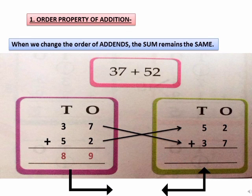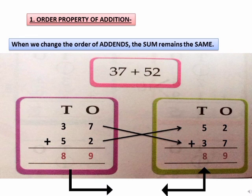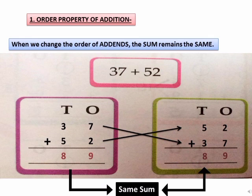Let's add. First, add the digit at ones place. That is 2 plus 7, which is equal to 9. Write 9 in the ones column. Now, add the digit at tens place. That is 5 plus 3, which is equal to 8. Thus, 52 plus 37 is also equal to 89. Hence, according to the property, by changing the order of addends, the sum remains the same.